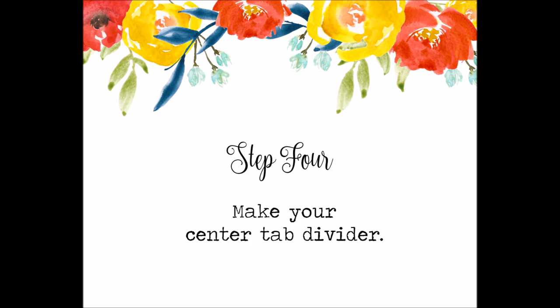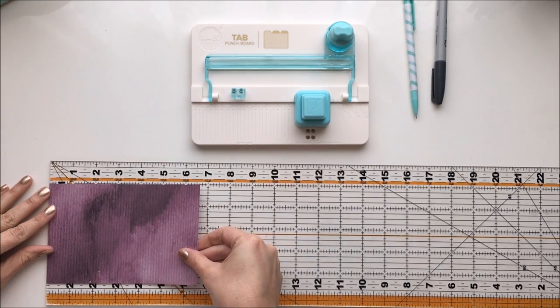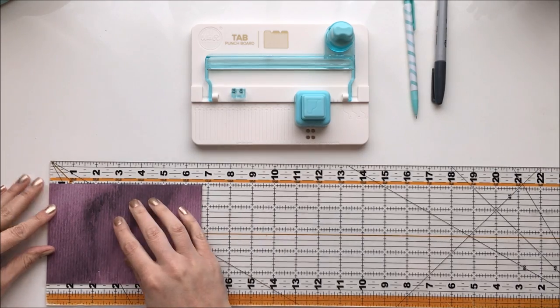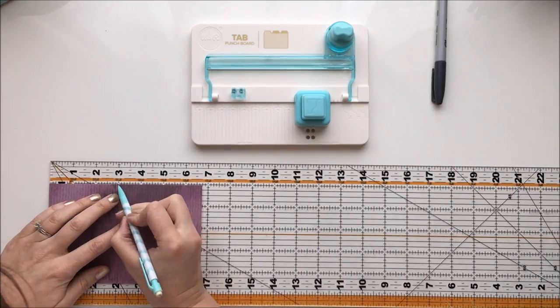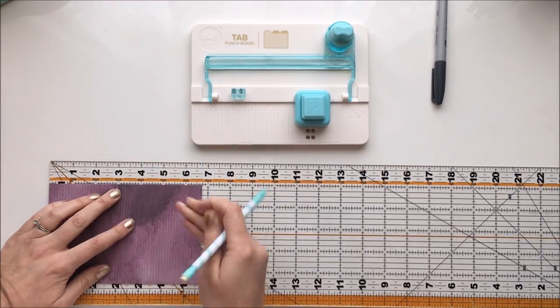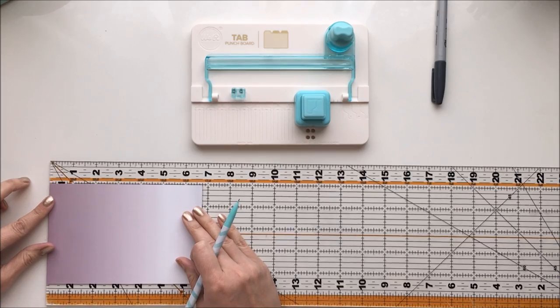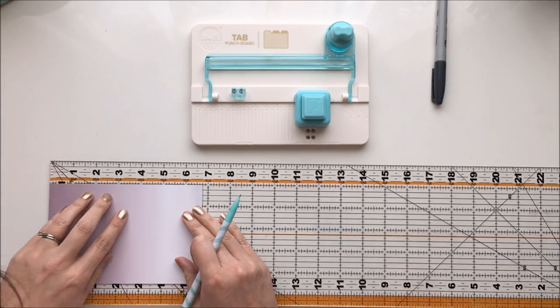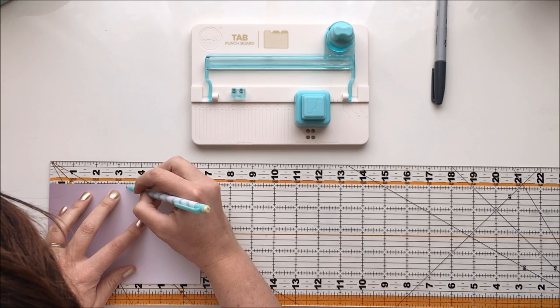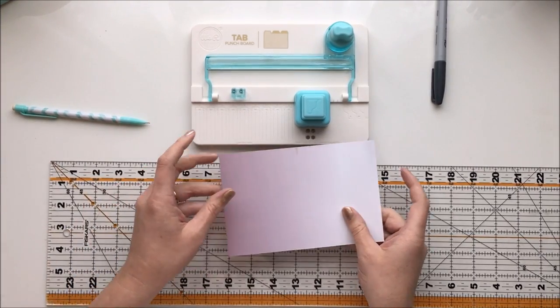Alright, so the next step is to make your center divider. So we are going to take that six and three quarters inch piece of paper and we're going to find the center of that and that measurement is three and three eighths of an inch. So I mark it with my pencil and then I realize I can barely see that the pattern is too dark. So that's why I flipped it over and marked it on the other side. It doesn't matter because this is the center page.